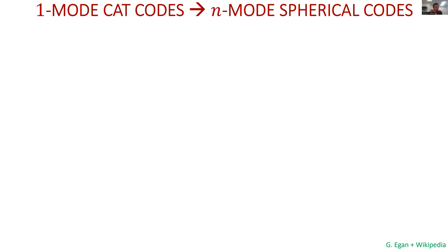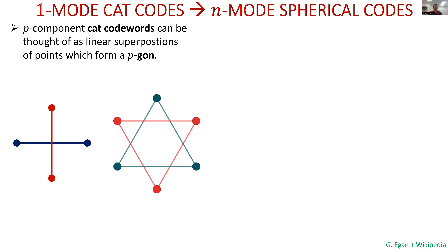The most applicable playground for spherical codes is the cat code — coherent state codes. What's been known before is cat codes for a single mode, where each codeword is defined by some set of coherent state points that are superposed. The red points are superposed to give one logical codeword, the blue points for the other. Those points make up vertices of a polygon — a square or hexagon, et cetera. We've finally been able to generalize this to multiple modes, looking at higher dimensional polytopes and superposing their vertices to get better-performing codes.